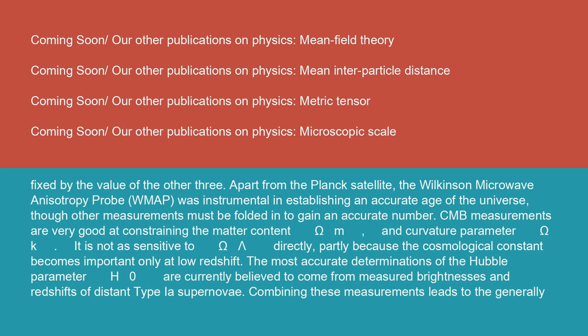Apart from the Planck satellite, the Wilkinson Microwave Anisotropy Probe (WMAP) was instrumental in establishing an accurate age of the universe, though other measurements must be folded in to gain an accurate number. CMB measurements are very good at constraining the matter content omega m and curvature parameter omega k. It is not as sensitive to omega lambda directly, partly because the cosmological constant becomes important only at low redshift.